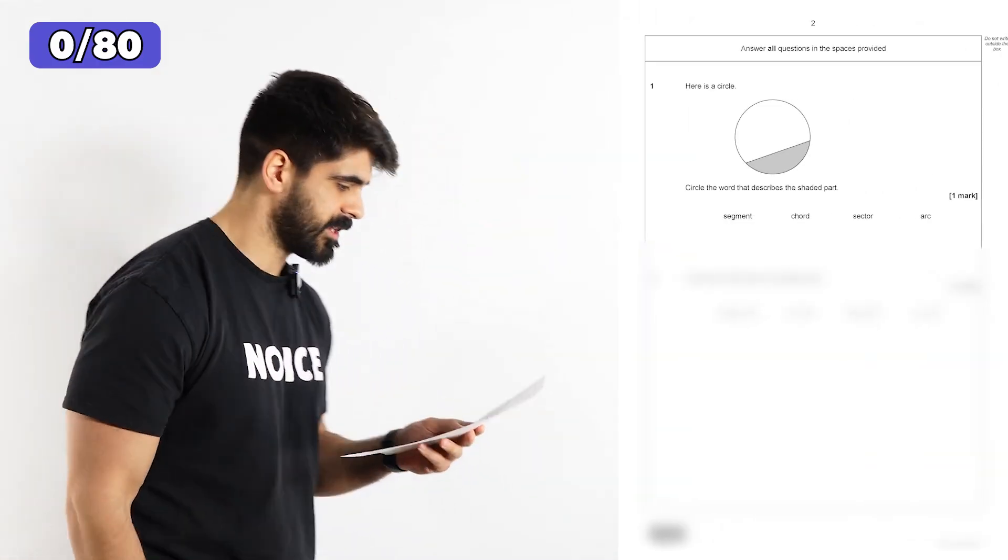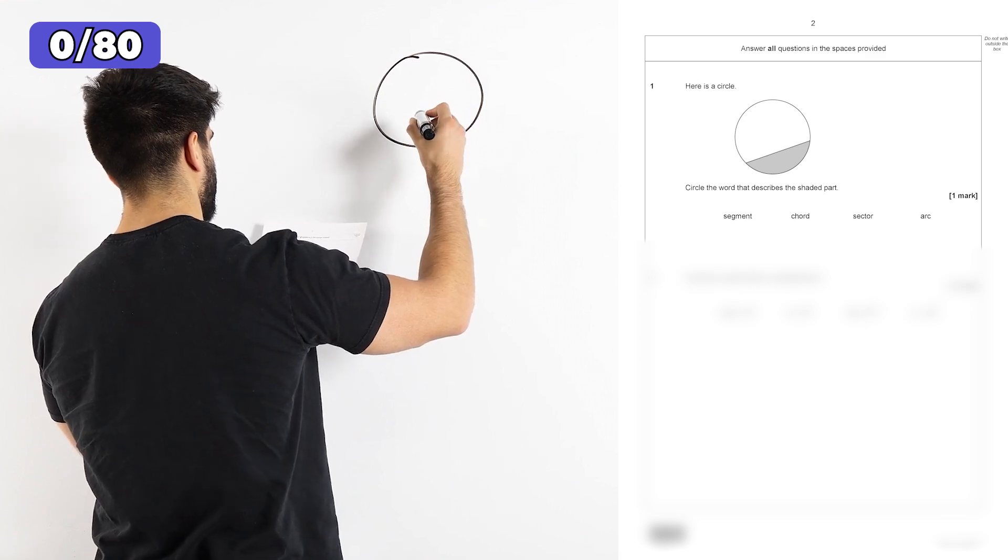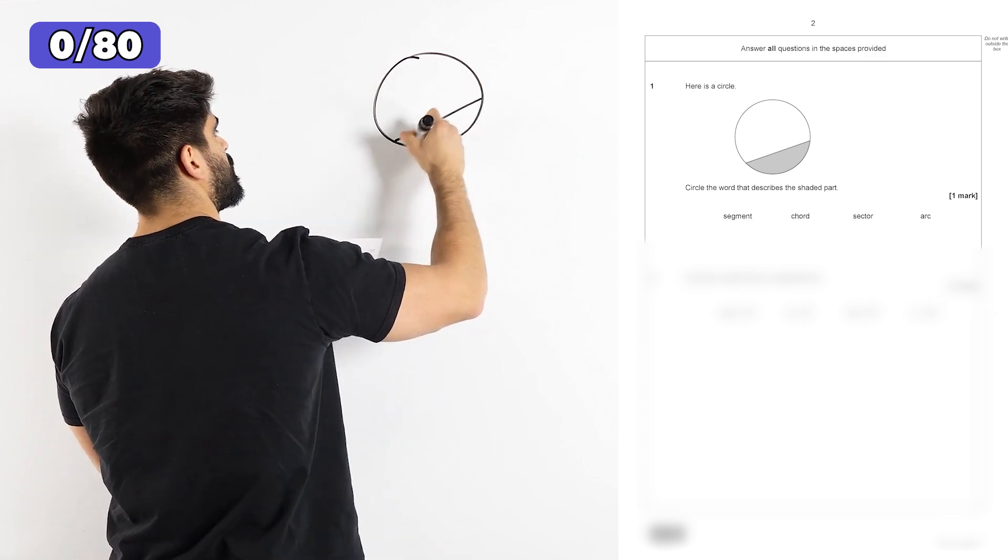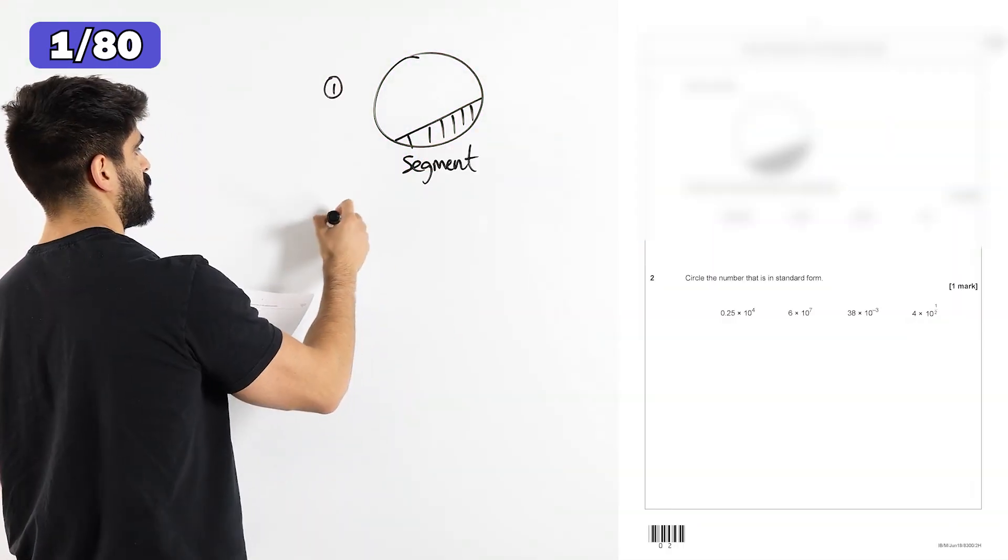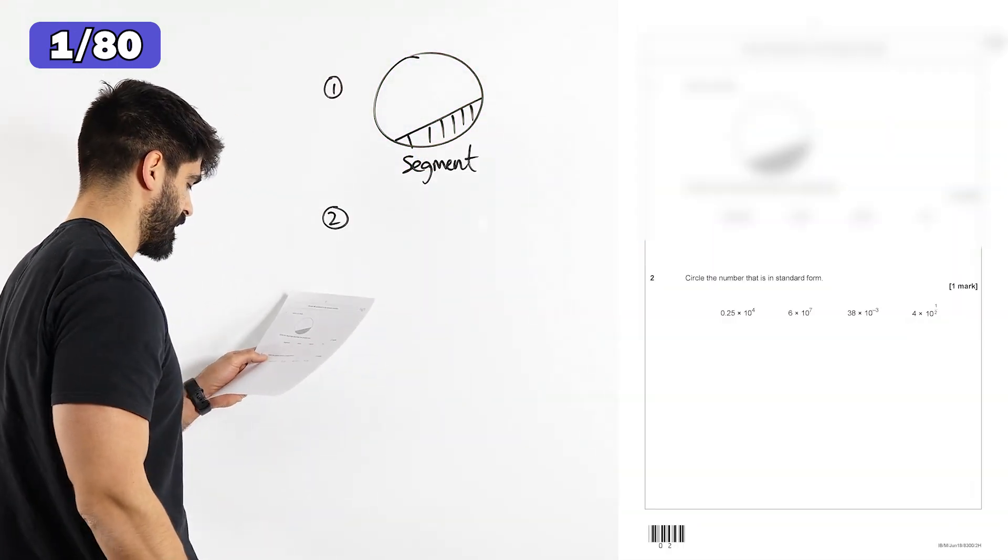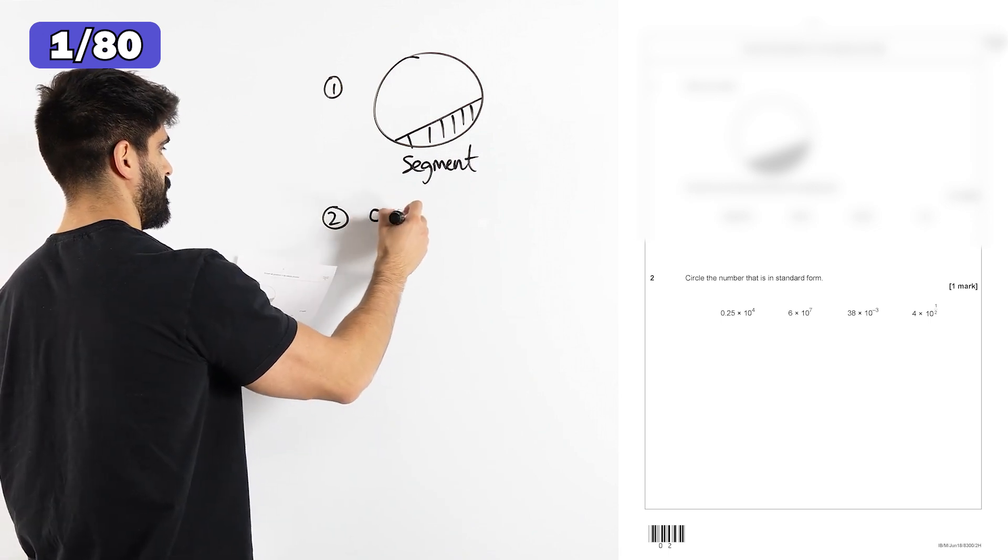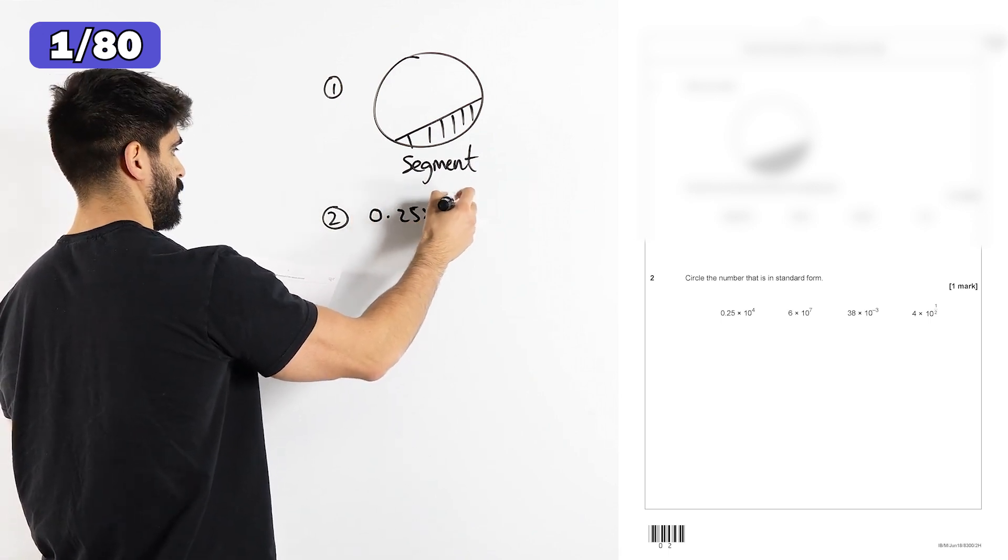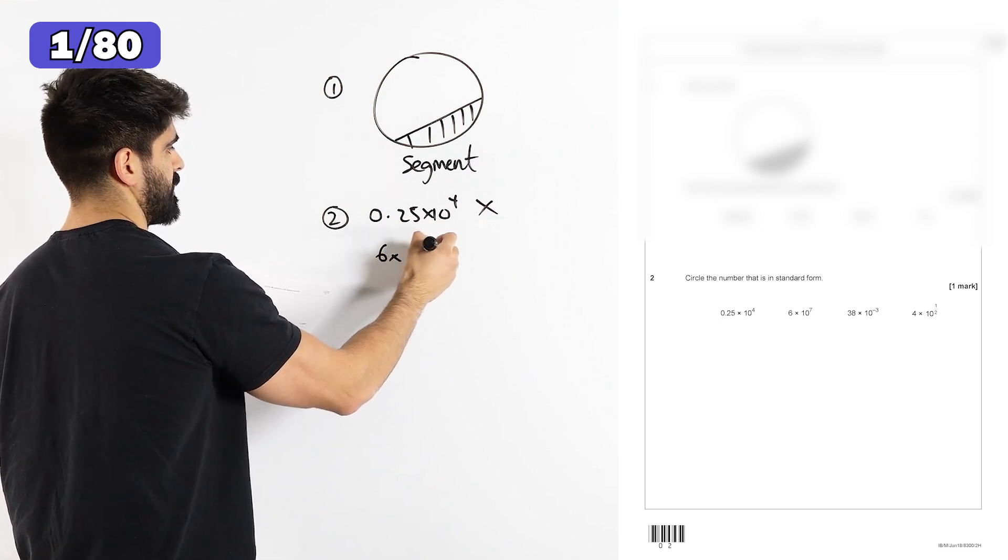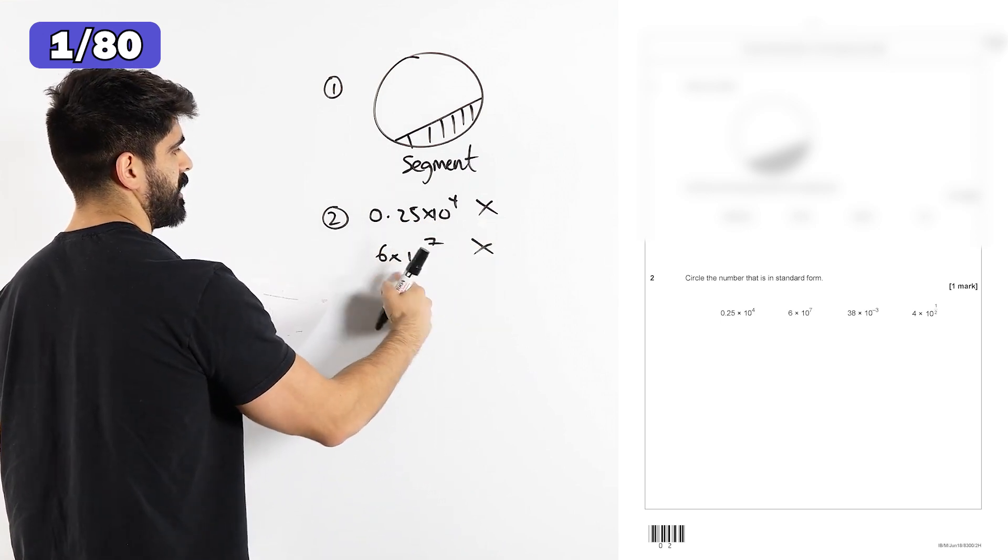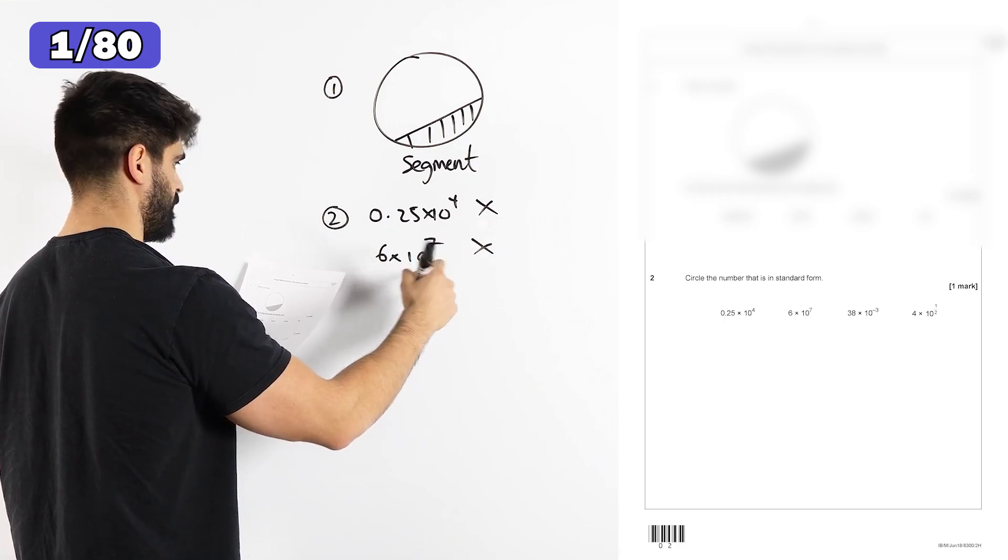Question one says, here is a circle. Circle the word that describes the shaded part. So that right there is a segment. Then for question two, it is saying circle the number that is in standard form. So we have 0.25 times 10 to the 4, which is not, because that's not between 0 and 1. 6 times 10 to the 7 is, wait, hold on. No, that is.